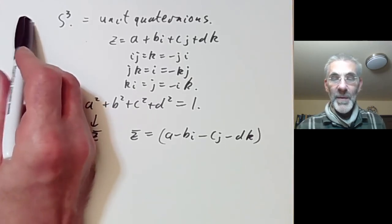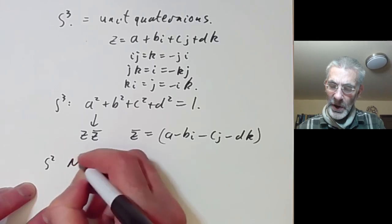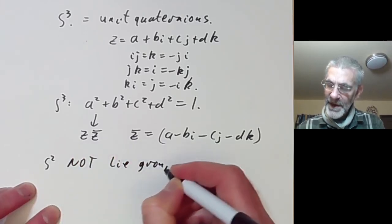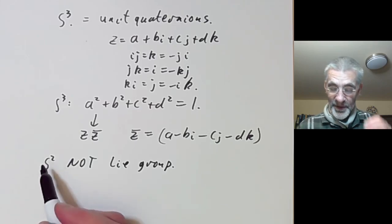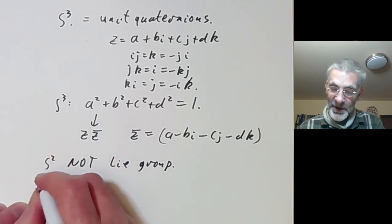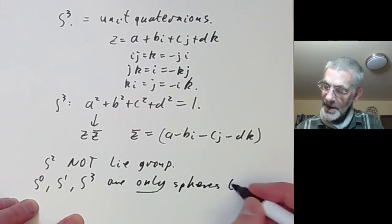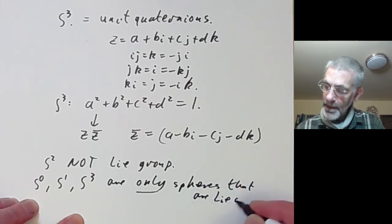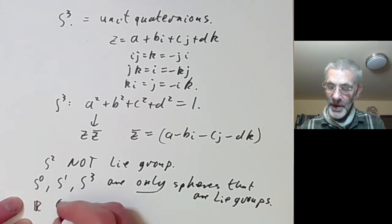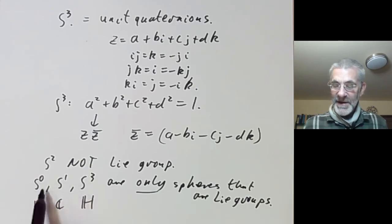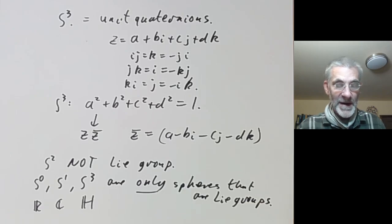By the way, we had S¹ being a Lie Group and S³ being a Lie Group. You might think I forgot S²; in fact S² is not a Lie Group — it has no continuous group structure on it at all. In fact, S⁰, S¹, and S³ are the only spheres that are Lie Groups. You can think of these as being the numbers of absolute value one inside the reals, the complex numbers, or the quaternions. This is closely related to the fact that there are only three finite-dimensional division algebras over the reals.